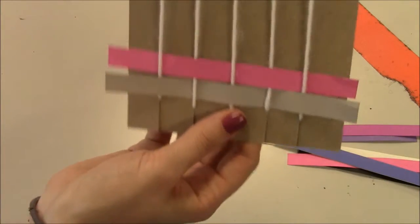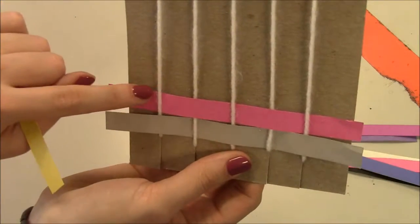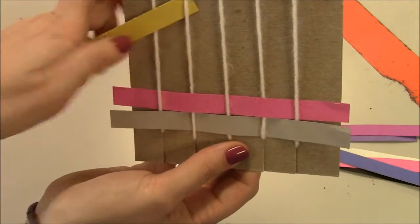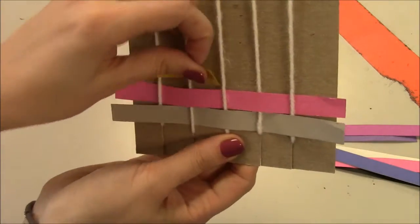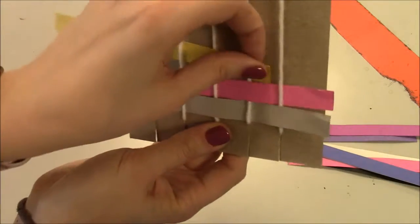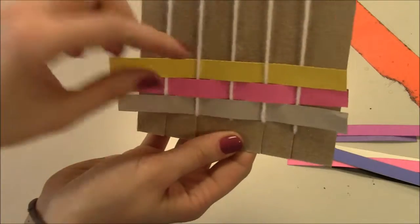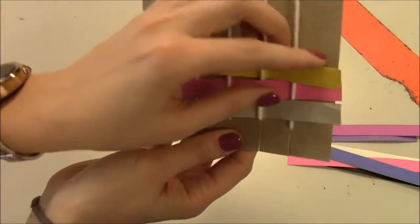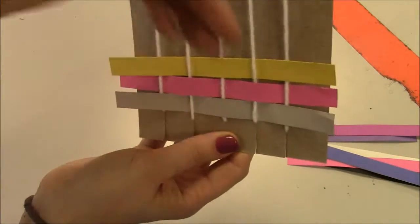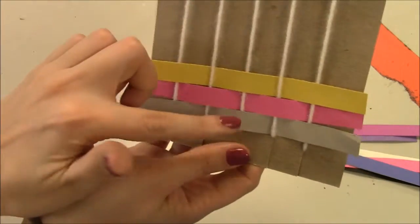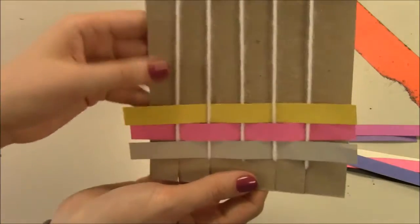Now the next one, instead of going behind, it's going to go in front. In front, behind, in front, behind, in front. And push it down. If it covers any of your colors, you've done it the wrong way. If it goes behind any of your colors, you've done it the wrong way. It should be locked in like a stack of bricks.